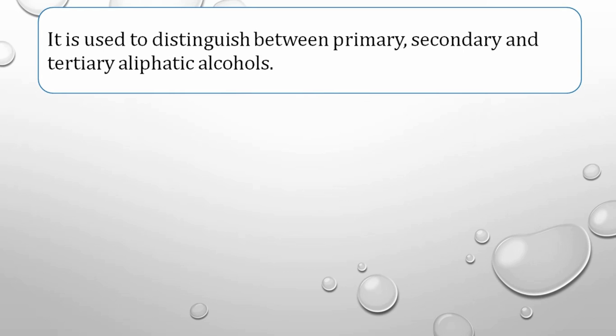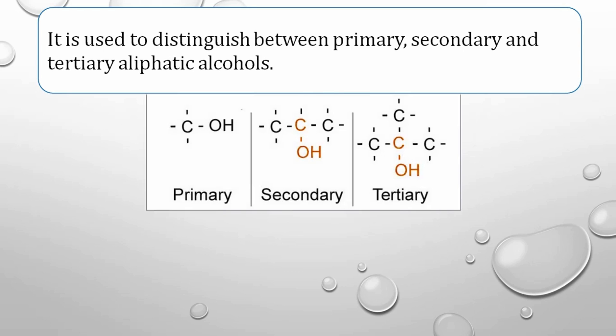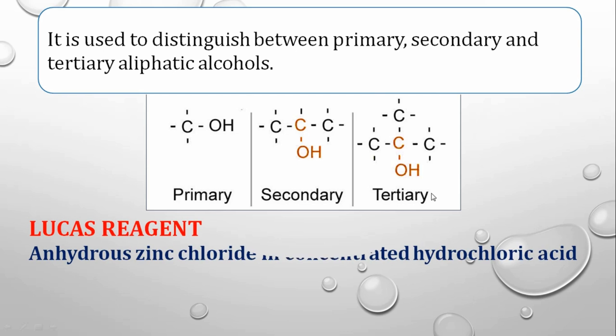We can easily find out the primary, secondary, and tertiary alcohol structures. The hydroxyl group is attached at different carbon positions, by which we can identify whether the alcohol is primary, secondary, or tertiary aliphatic alcohol. Now, what is the reagent used in the Lucas test?